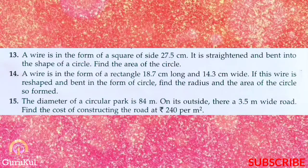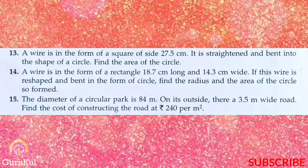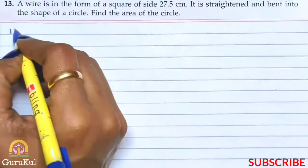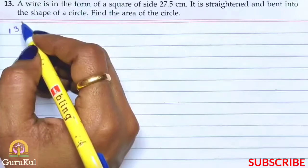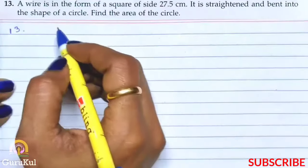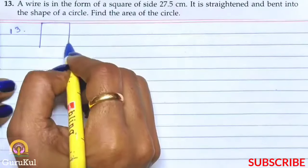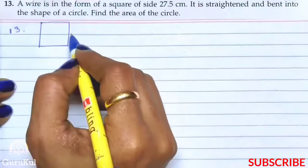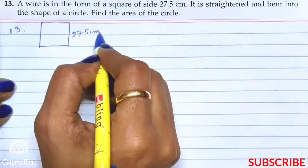Today I am going to start with part 4 of exercise 16.3, question number 13. A wire is in the form of a square of side 27.5 cm. So square where all the 4 sides are equal and one of its sides measures 27.5 cm.